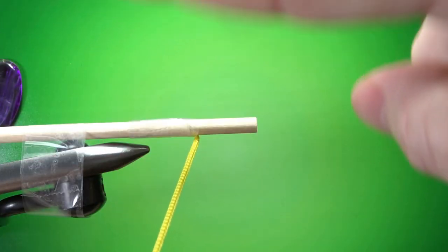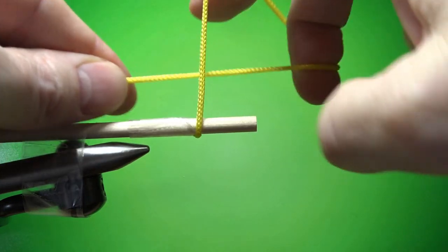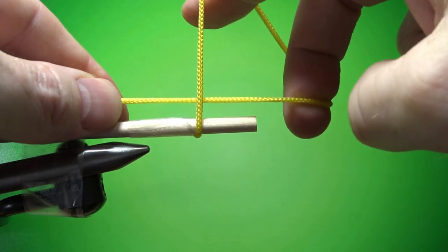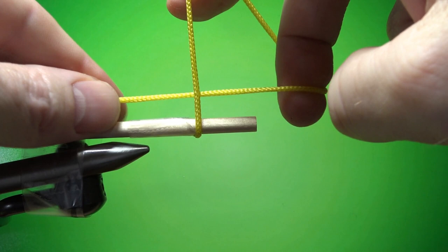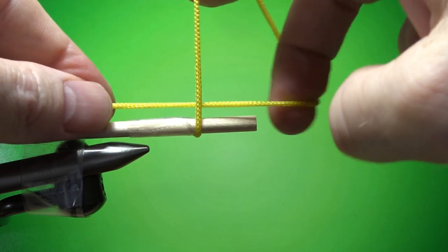Take your two fingers, push down on it, bring it up, create a four. See that? That four is the basis for all whip finishes, whether you're doing it by hand or doing it with a tool.